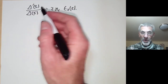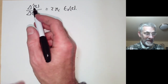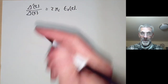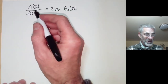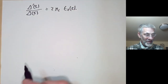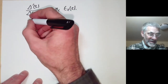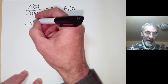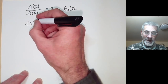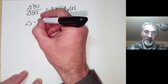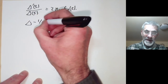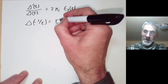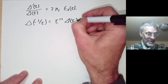That assumes the product formula for the delta function, which we will prove later. For now let's just assume it and look at some consequences. Since Δ is a modular form, Δ(−1/τ) equals τ to the 12 times Δ(τ).